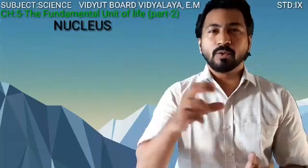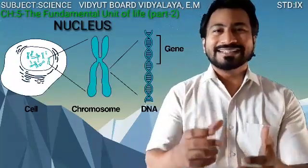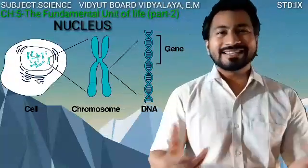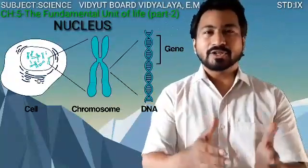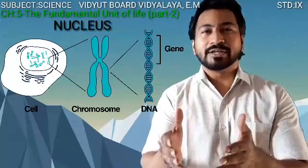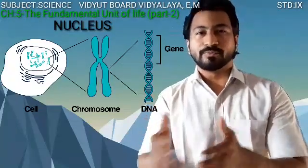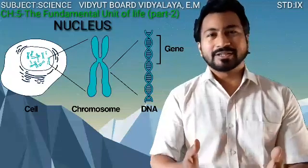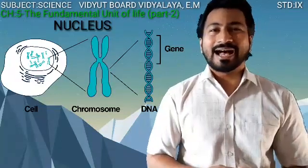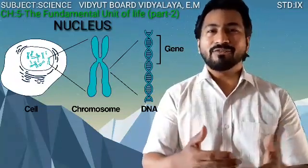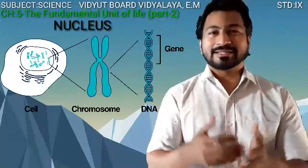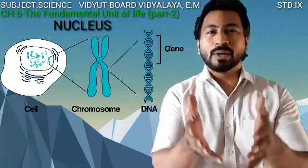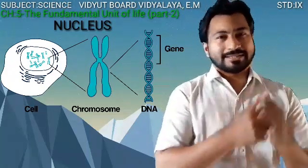Furthermore, a small segment of this DNA is known as a gene. A structural and functional unit of a chromosome or chromatin is known as a gene. Genes are the units of inheritance — inheritance meaning the transfer of characteristics from one generation to the next.